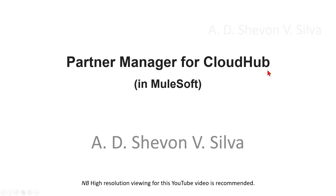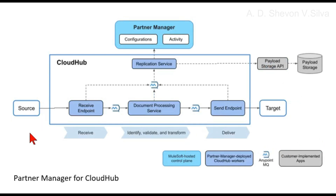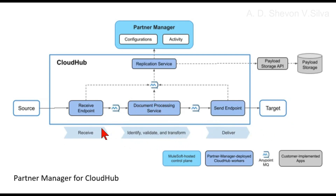Here you can see the Partner Manager for Cloud Hub. When deploying B2B integration message flows to Cloud Hub, Anypoint MQ uses queues between processing stages to add additional reliability to B2B message processing. As of the first deployment from the Partner Manager, runtime applications are deployed to the cloud. Anypoint MQ queues automatically generate during the deployment process.